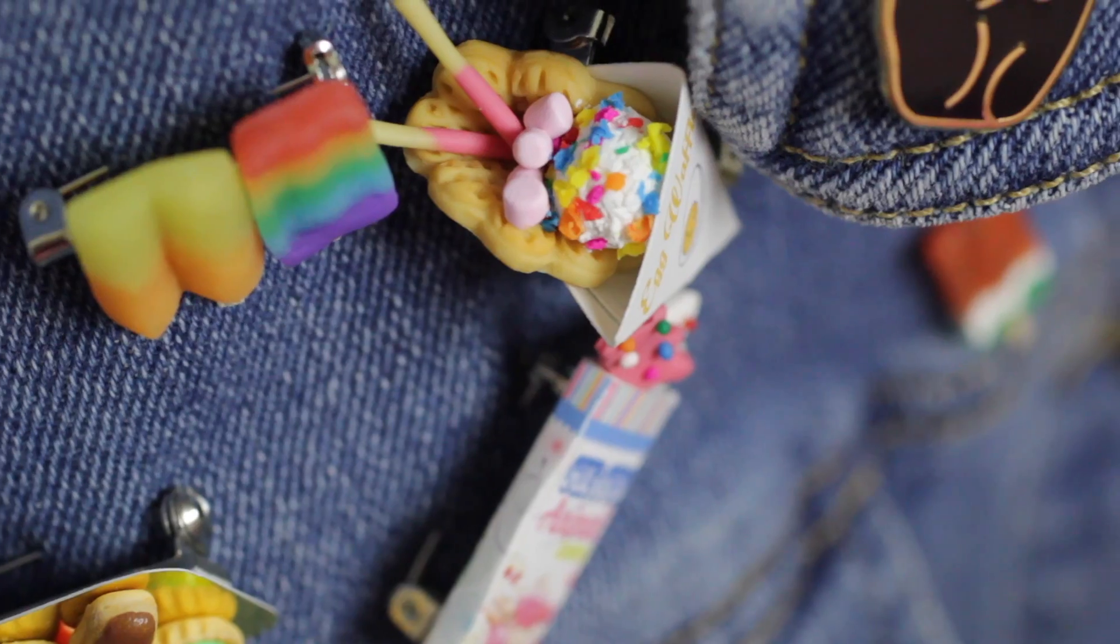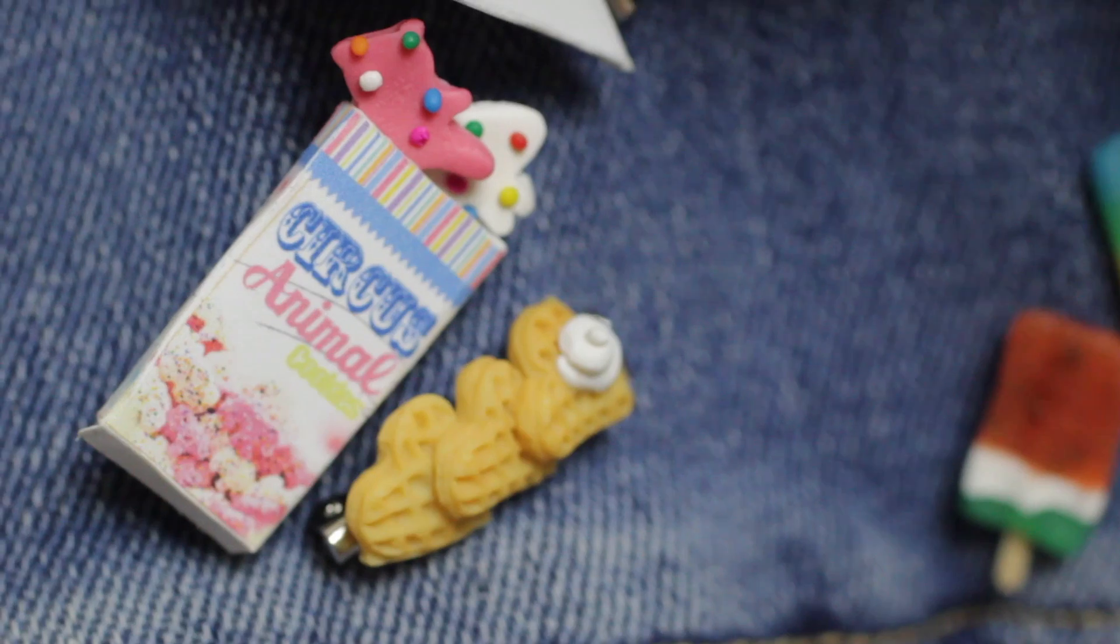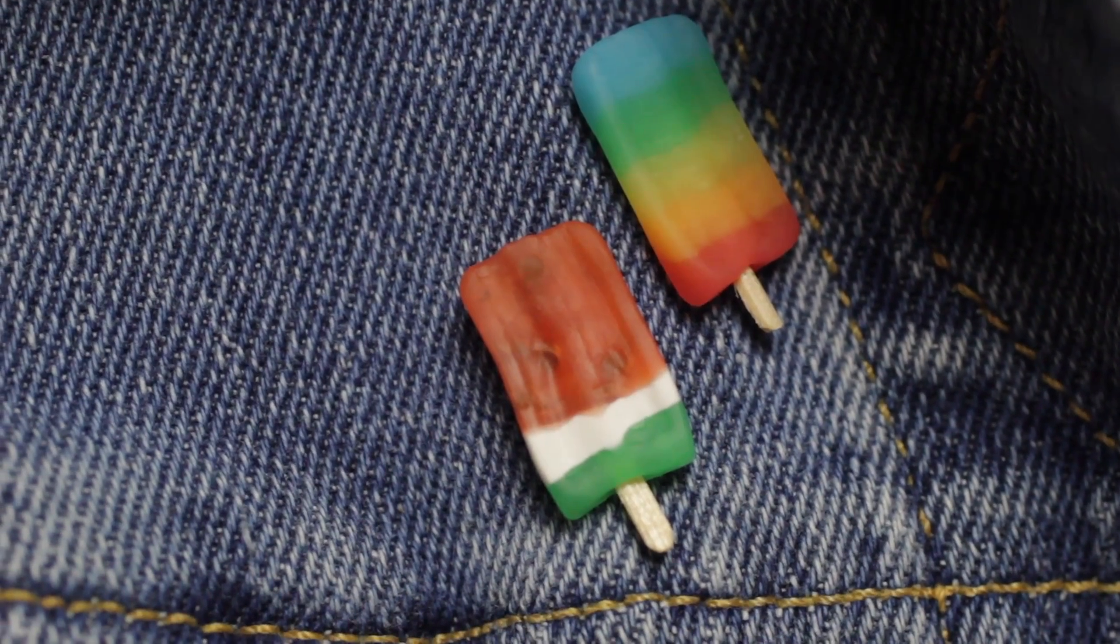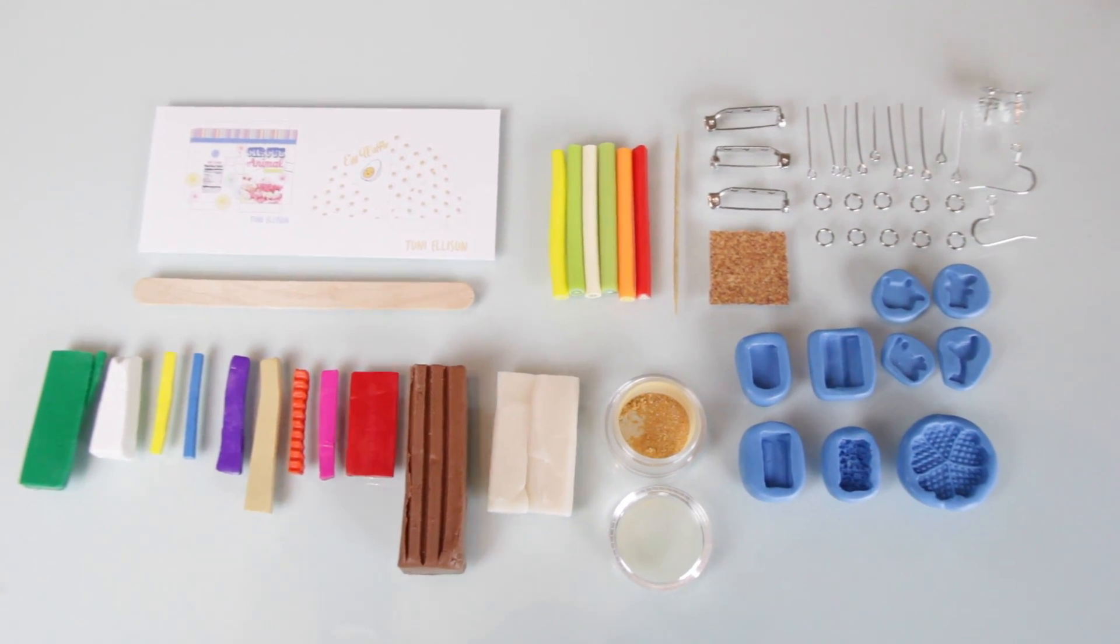This month's Mandala box has heart-shaped waffles, animal cookies, and popsicles, all that have been turned into jewelry. Here's everything that comes in the box.